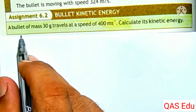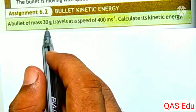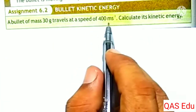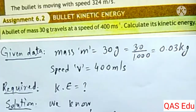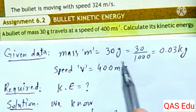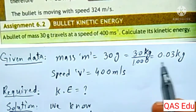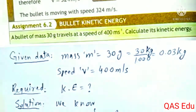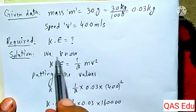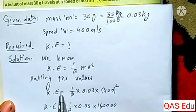Example 6.2 continued: A 30-gram bullet traveling at 400 meters per second. Converting 30 grams to kilograms gives 0.030 kg. We are required to find the kinetic energy. Kinetic energy equals one-half m·v².